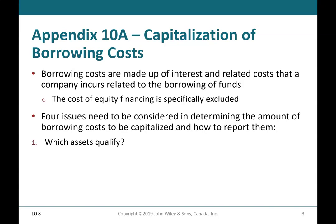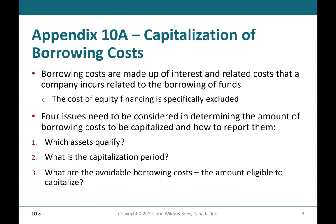The four issues are: which assets qualify, what is the capitalization period, what are the avoidable borrowing costs and the amount eligible to capitalize, and what disclosures are needed?